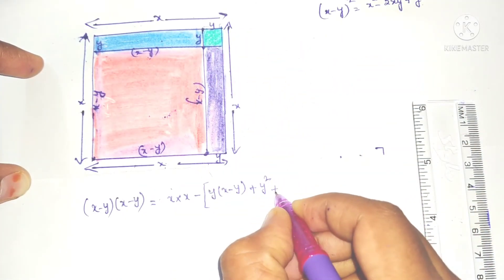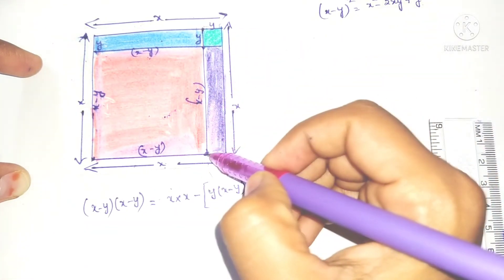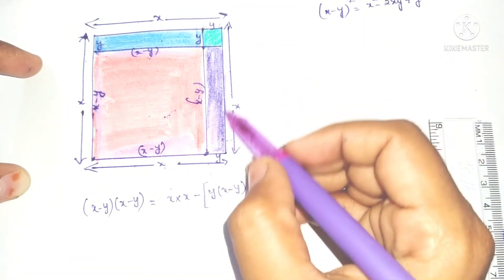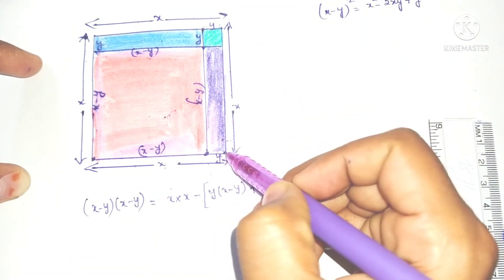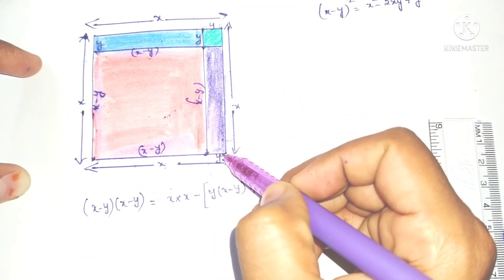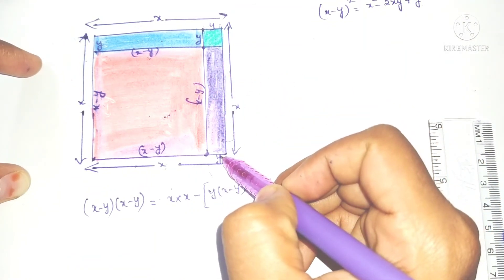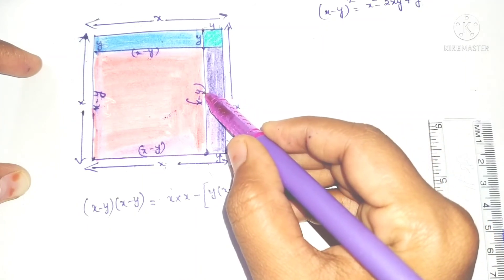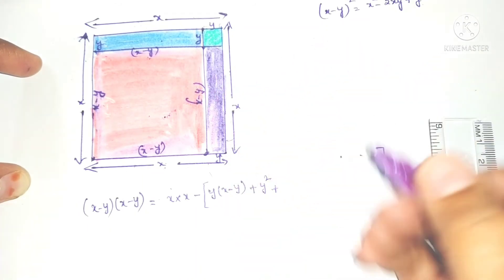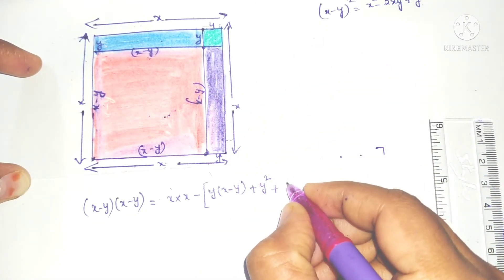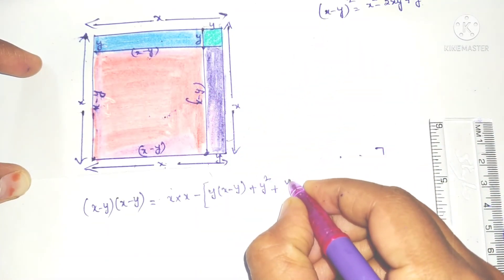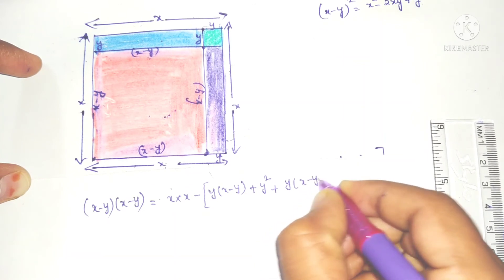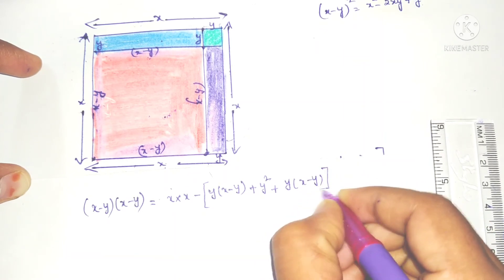And again this rectangle has breadth y units and length x minus y units, so this is y into x minus y.